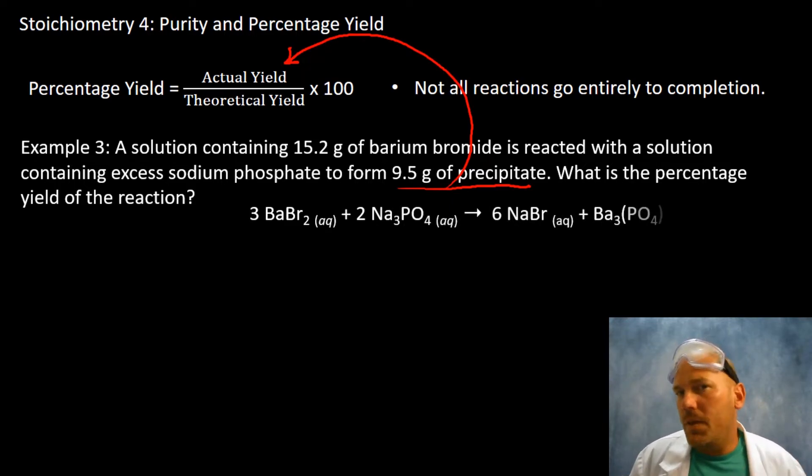We use our states of matter and solubility table or solubility rules to discern that the barium phosphate is our precipitate, i.e. the solid, and all the other species here are aqueous. Balanced, we get a three to two to six to one mole ratio. Next step.